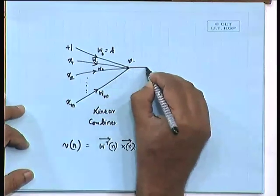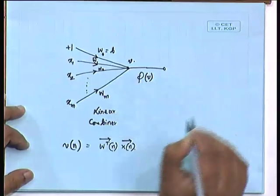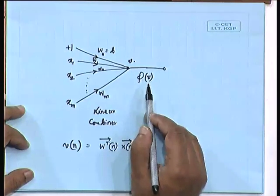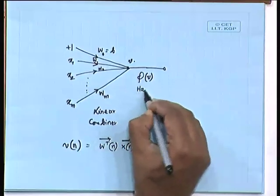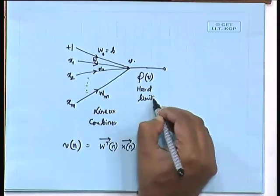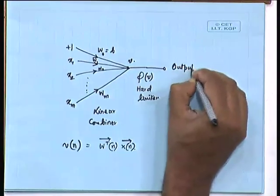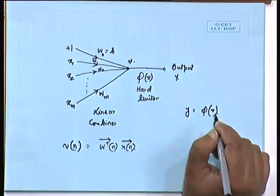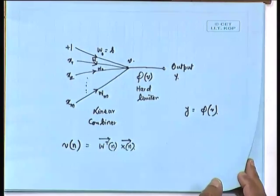After the linear combiner output v, we follow it with a hard limiter. This hard limiter transforms v into phi(v), which hard-limits it to +1 or -1. So this is a binary pattern classification we are considering — the simplest case. The output y is nothing but phi(v).